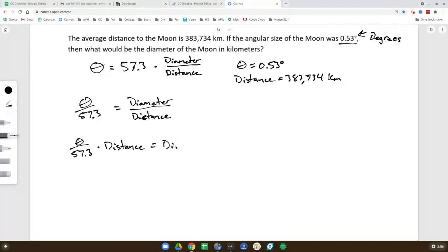Now you don't even have to rearrange this again. If you solve this on the lab quiz, you can just use this version of the equation and plug in the numbers to find what the diameter is. So we're going to plug in theta, so it'll be 0.53 degrees divided by 57.3, and then we multiply it by the distance of 383,734.